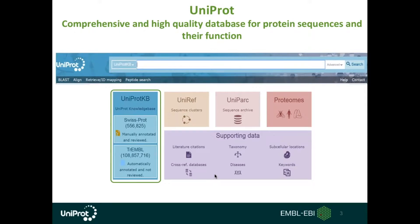UniProt has various components such as UniRef. UniRef represents clusters of sequences which are grouped based on sequence identity of 100, 90, and 50%. The other component of UniProt is UniParc. UniParc represents the sequence archive of new, revised, or obsolete sequences.